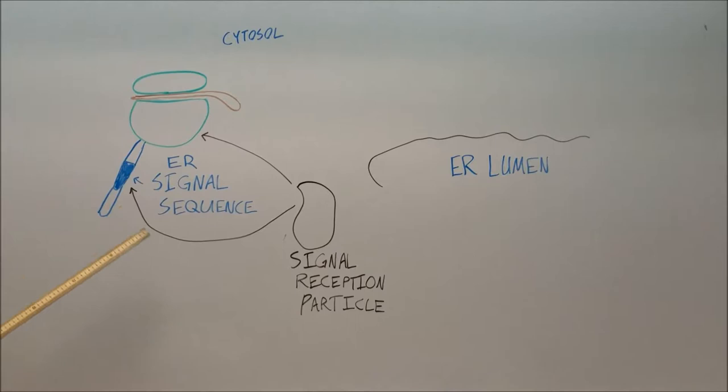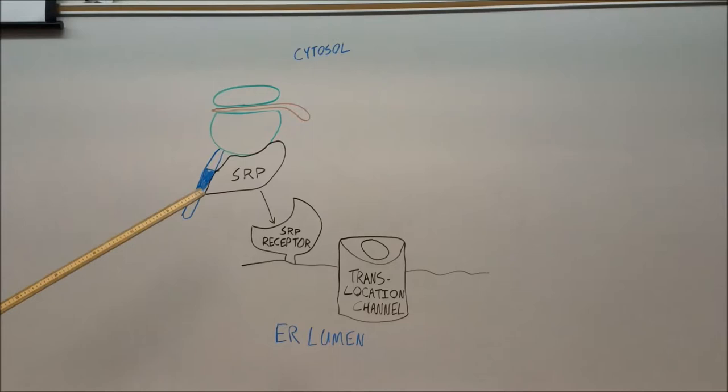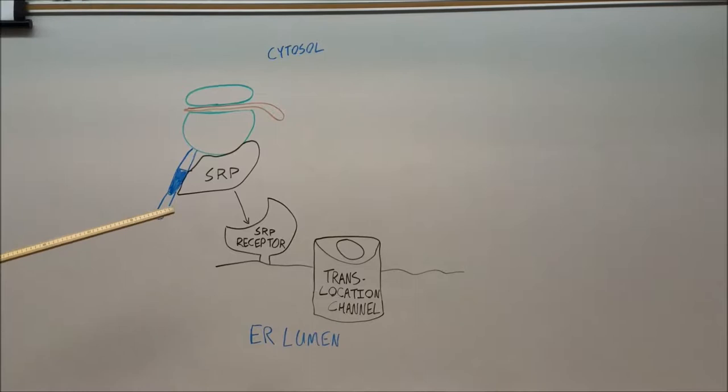Eventually the mRNA translates an ER signal sequence. At that point, a signal recognition particle, or SRP, bonds to the ER signal sequence and the free ribosome. When the SRP bonds to the free ribosome and the ER signaling sequence, the translation slows down.